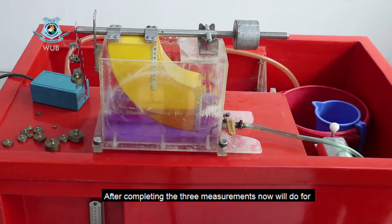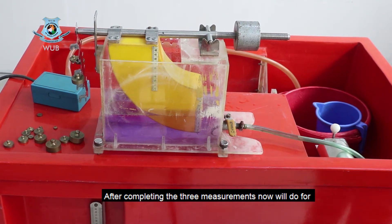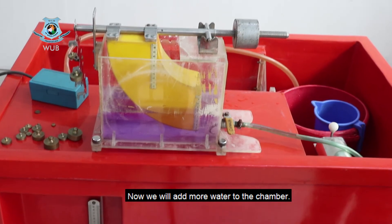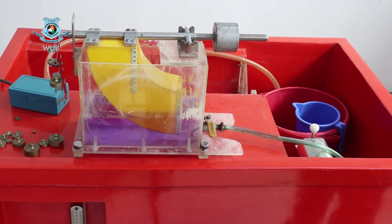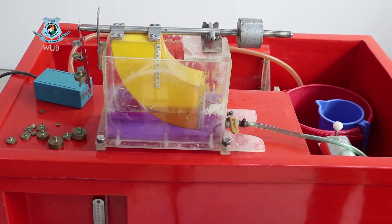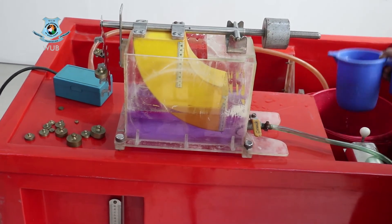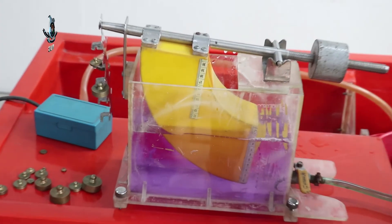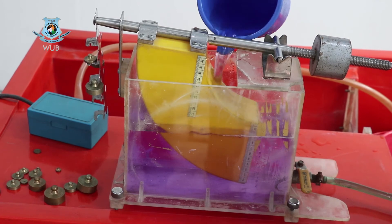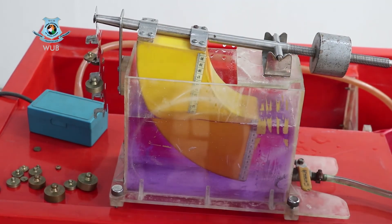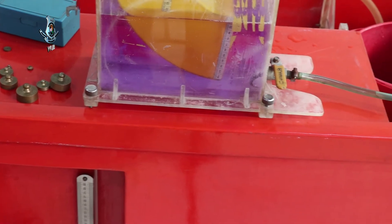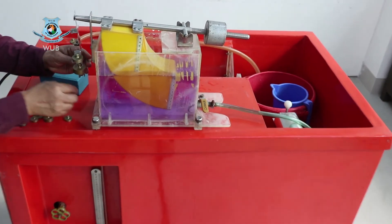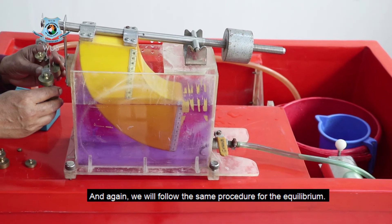After completing the three measurements now we will do for the complete submergence condition. Now we will add more water to the chamber. We will add more water and again follow the same procedure for equilibrium.